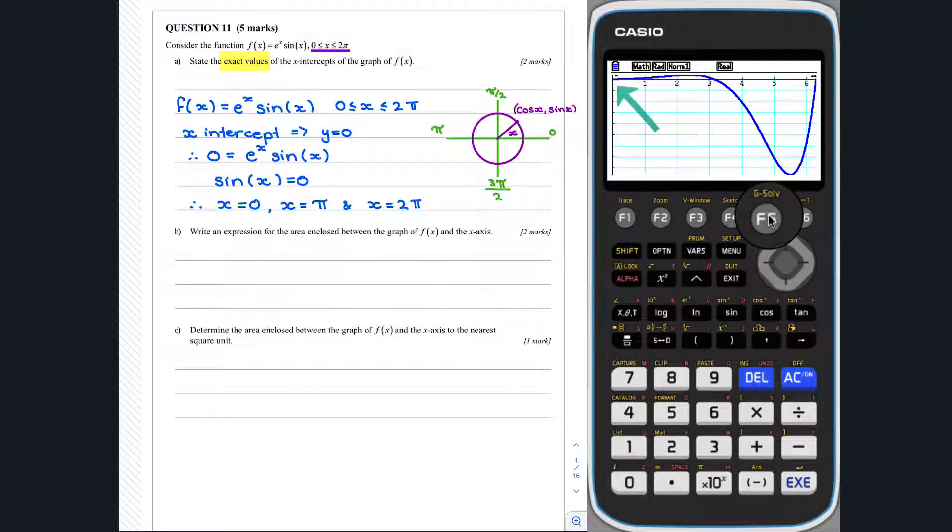We can see that from 0 to pi, the graph is above the x-axis, and from pi to 2 pi, it is below the x-axis. Thus, we can represent the area enclosed between f of x and the x-axis as follows.